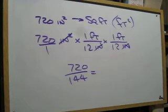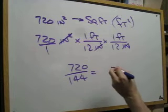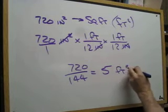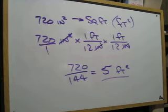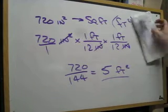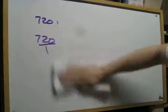We divide that out, and when we divide it out, we get 5 square feet. And that's what our answer is for 720 square inches to square feet.